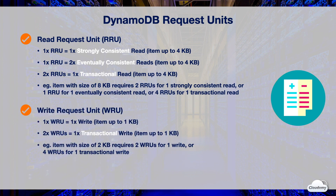One write request unit represents one write for an item up to 1 KB in size. The total number of write request units doubles when you perform transactional writes. For items larger than 1 KB, DynamoDB consumes additional write request units. For example, if an item size is 2 KB, you need two write request units for one write, or four write request units for one transactional write.